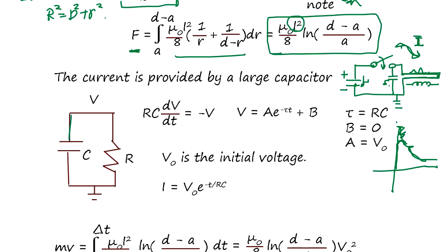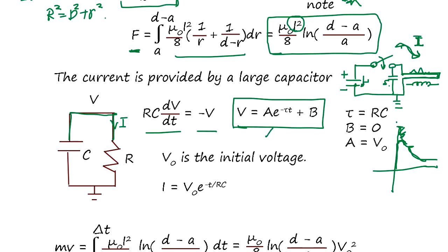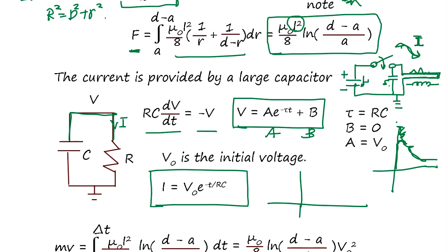The current is provided by the large capacitor. The simplified circuit equation gives a voltage attenuation equation; solving for constants A and B yields the current as a decaying function starting from some initial value V0 and reducing over time.